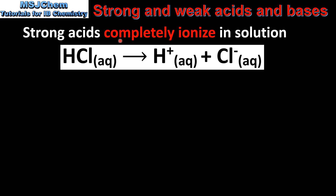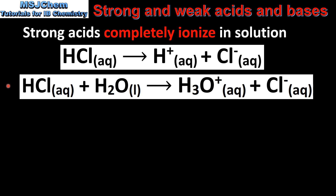Strong acids completely ionize or dissociate in solution. Here we have one mole of hydrochloric acid and it dissociates to form one mole of hydrogen ions and one mole of chloride ions. The second equation shows the same reaction but here we've included the water molecule in the reactants and the hydronium ion in the products.